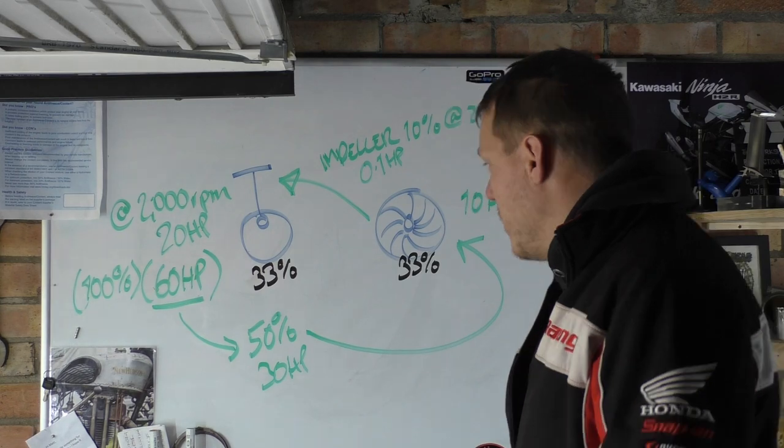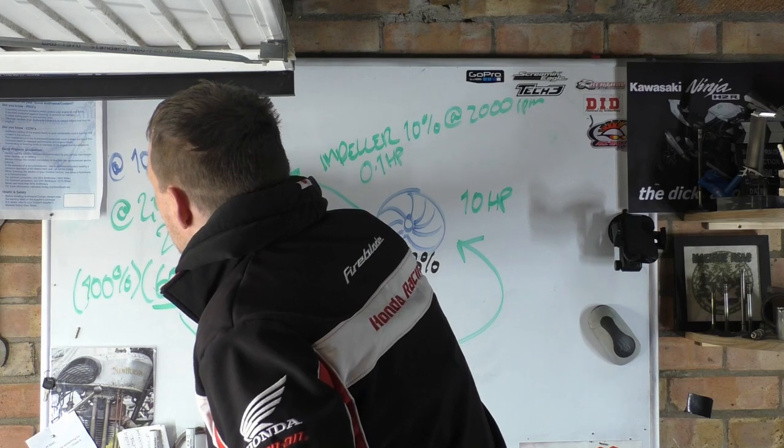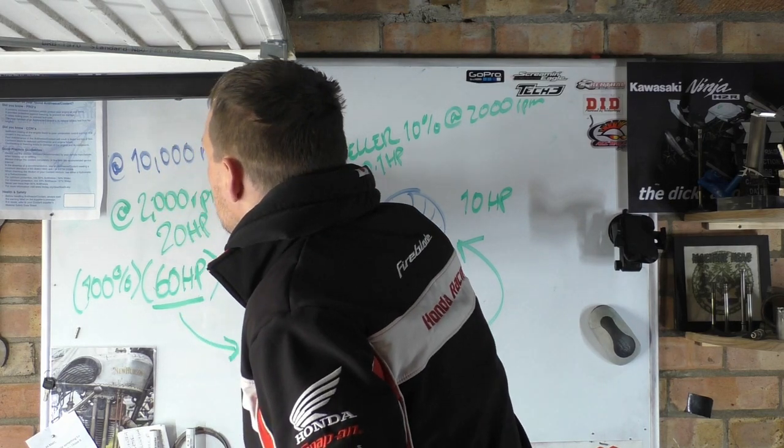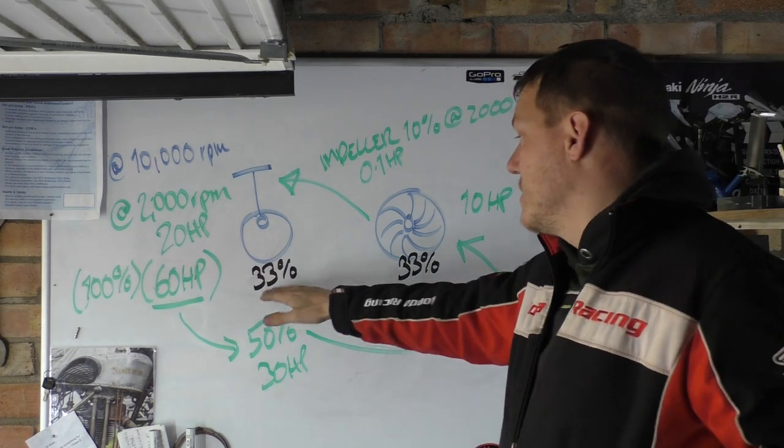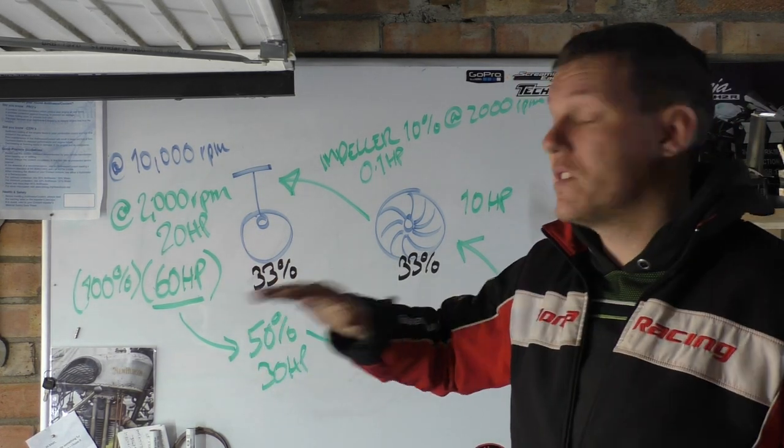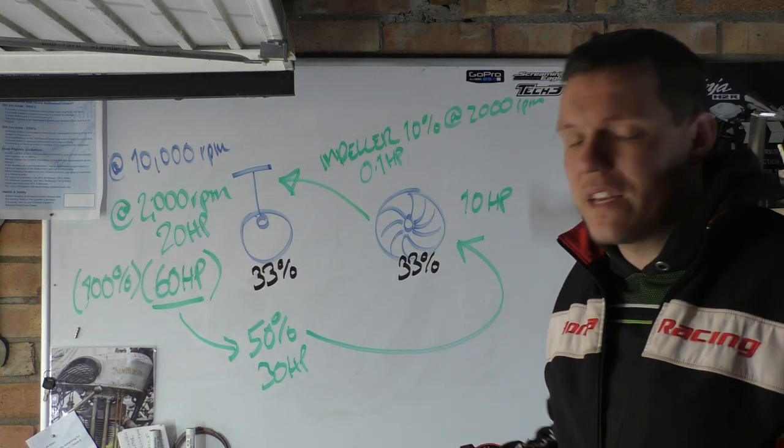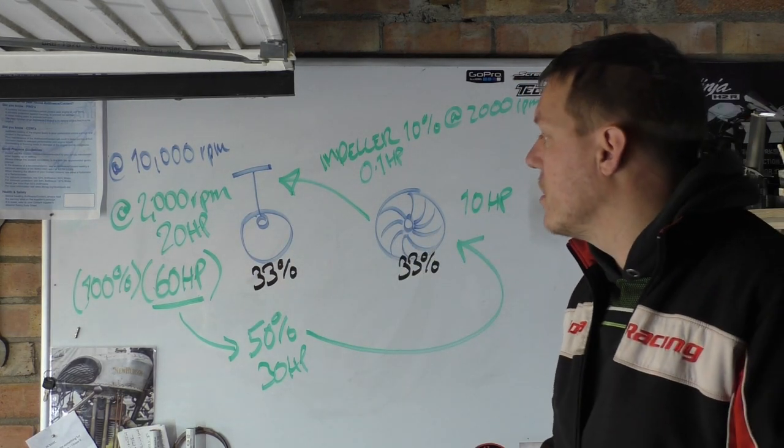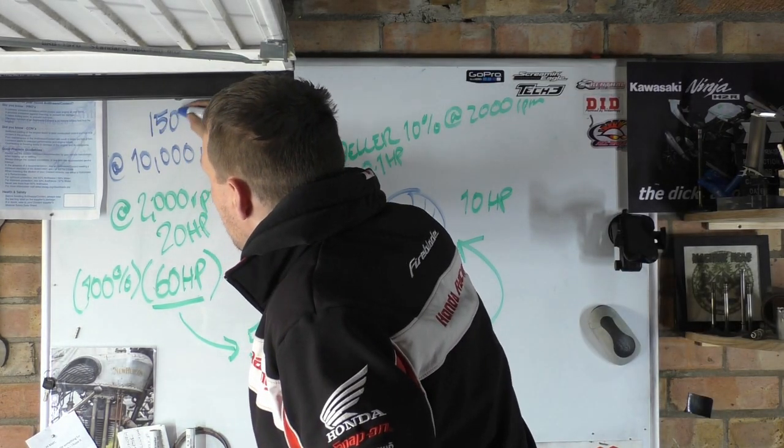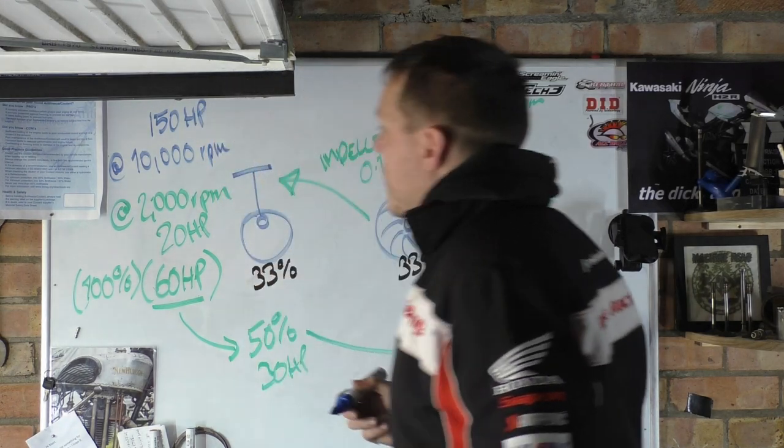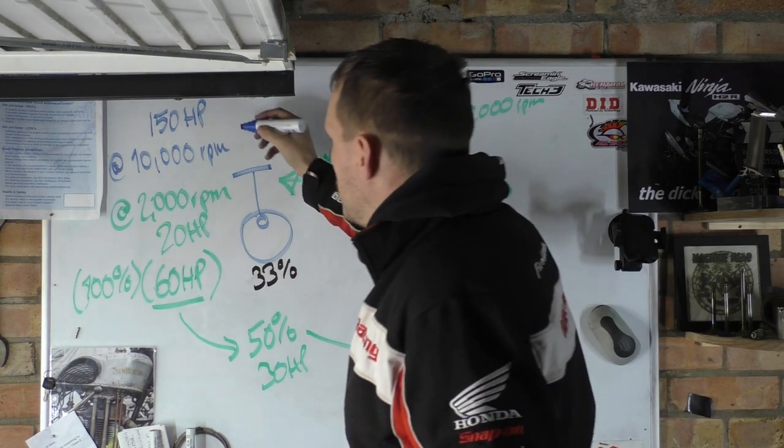Obviously you've got the turbine, then your 80% efficiency depending on what speed. At low speed your impeller efficiency is 10%, so even this 10 horsepower, your impeller efficiency at the 2000 rpm - 10% of that is 0.1 of a horsepower. That's how much power it's using to push that air into this engine at this speed.